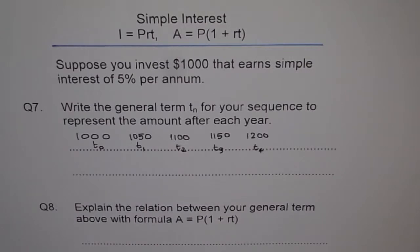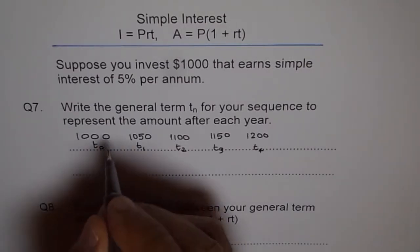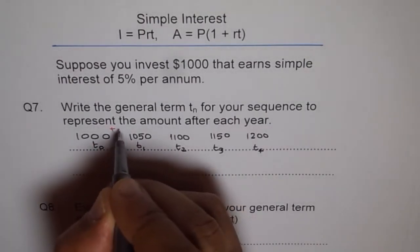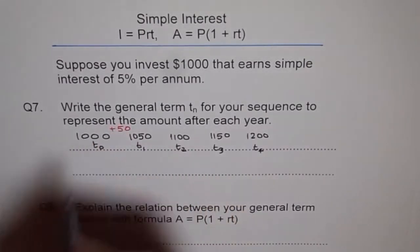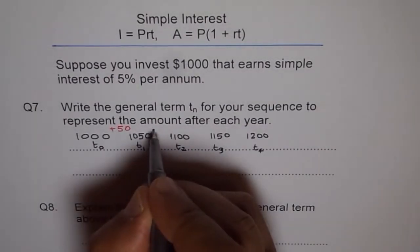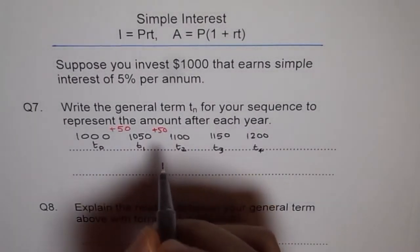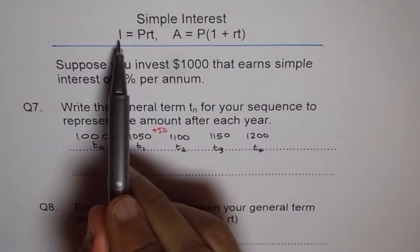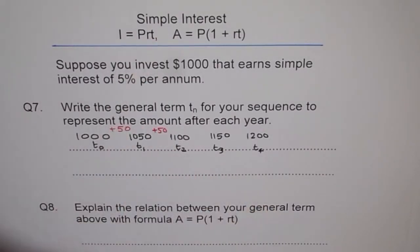Now that is the sequence you are seeing. So do you notice anything? So what we note here is that every year we get an increase in addition, $50. Starting with initial amount of $1000, we get $50 more. And this $50 more is because of simple interest earned, I = P × r × t.